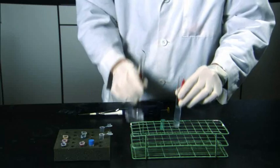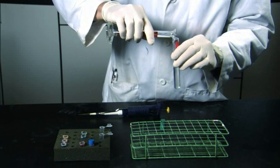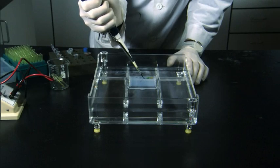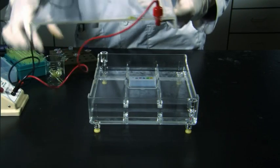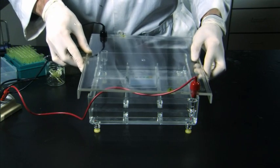First, enzymes are used to cut the DNA strands at specific locations. This results in DNA fragments of different sizes for different people. These DNA pieces are placed in a special gel, and an electric current is applied.